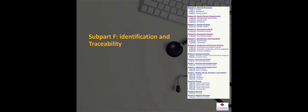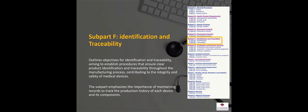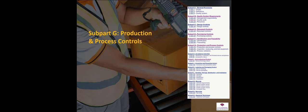Sub-part F covers identification and traceability. This is critical. We need to be able to track medical devices when they go out into the field, we need to be able to identify them, and we need to have full traceability if we have to do a product recall — we want to be able to do that effectively and efficiently, and that's all covered under sub-part F.